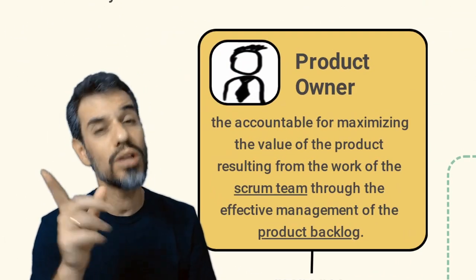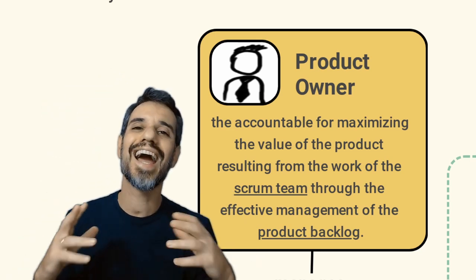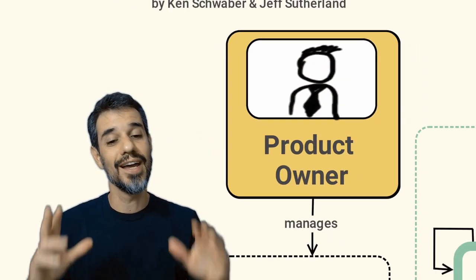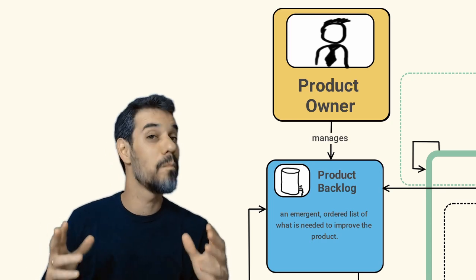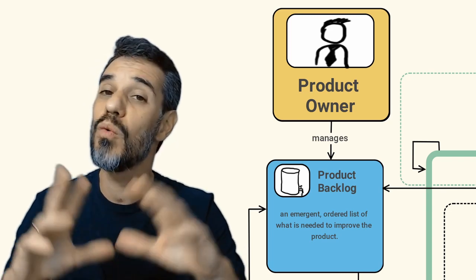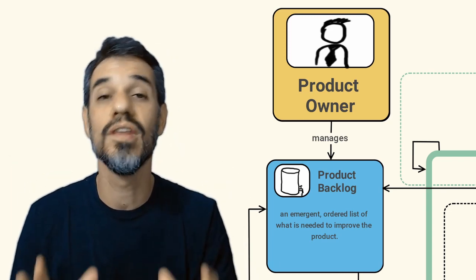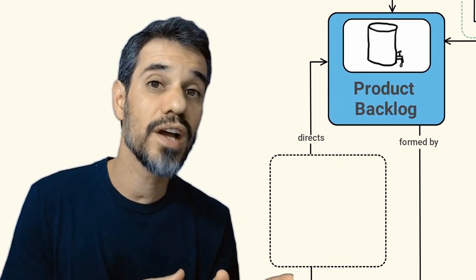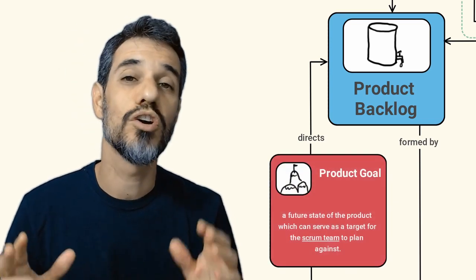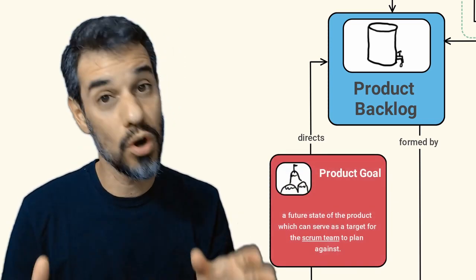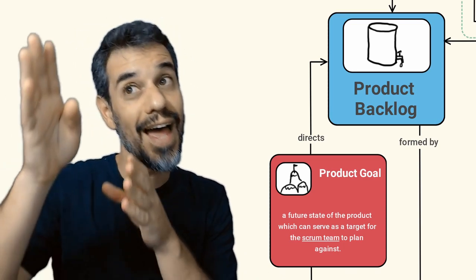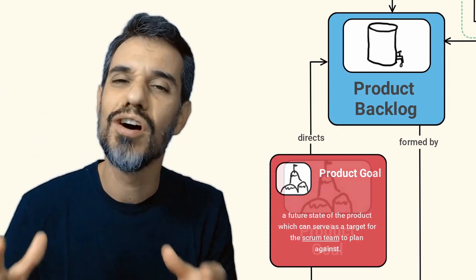The product owner, starting with him. He is the accountable for maximizing the value of the product. He is the one responsible for managing what we call the product backlog. This is the first artifact of Scrum. The product backlog maintains all the work and value that must be delivered by the product team. For each artifact there is a commitment related to it. And for the product backlog the commitment is the product goal. The product goal directs the product backlog saying to the team where this product should end, what's the final state for that product.